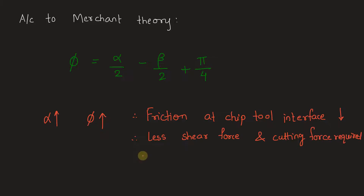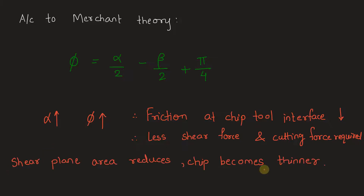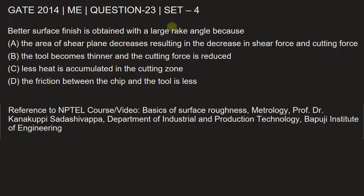The shear plane area will also reduce, and the chip will become thinner. So from all these points we can identify the correct answer. With a large rake angle, the area of shear plane decreases, resulting in a decrease in shear force and cutting force. This is our answer — option A.